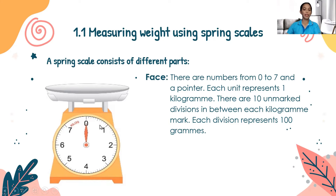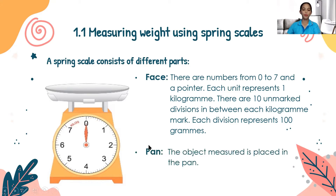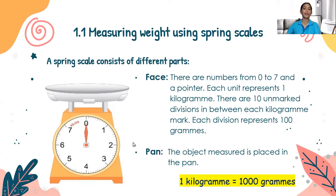Each division represents 100 grams. Starting from the first mark, we have 100 grams, 200 grams, 300 grams, 400 grams, 500 grams, 600 grams, 700 grams, 800 grams, and 900 grams. Next, we have the pan. The object being measured is placed in the pan. Remember, 1 kilogram is equal to 1,000 grams.